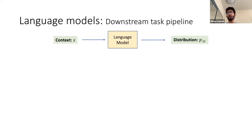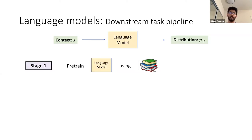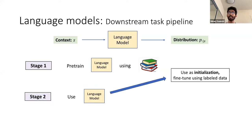I'll give a brief overview of how language models are used for downstream tasks. It's typically done in two stages. In the first stage, you pre-train a language model using large amounts of unlabeled data — for example, all of Wikipedia. In the second stage, you use the language model for a downstream task, and you can do so in multiple ways.